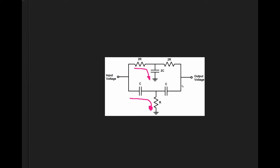When we sum a high pass filter and a low pass filter, we get their combined response. But you notice that there is a relationship between each of these components — this resistor is half the value of these two resistors, which are equal in value.